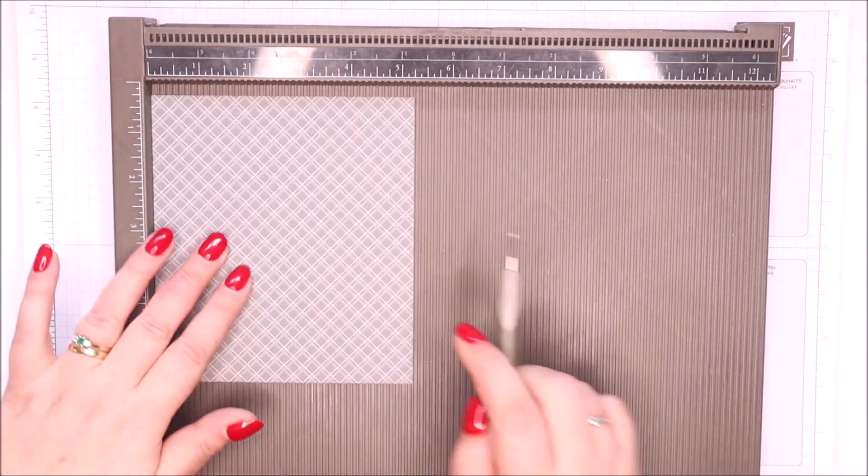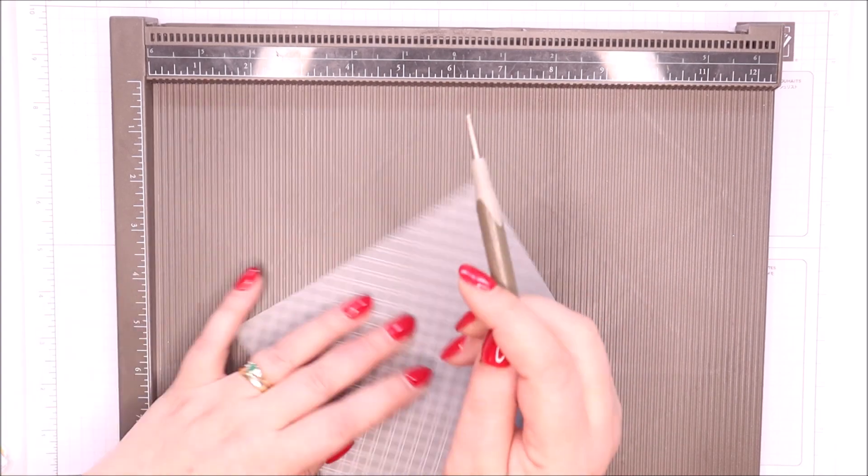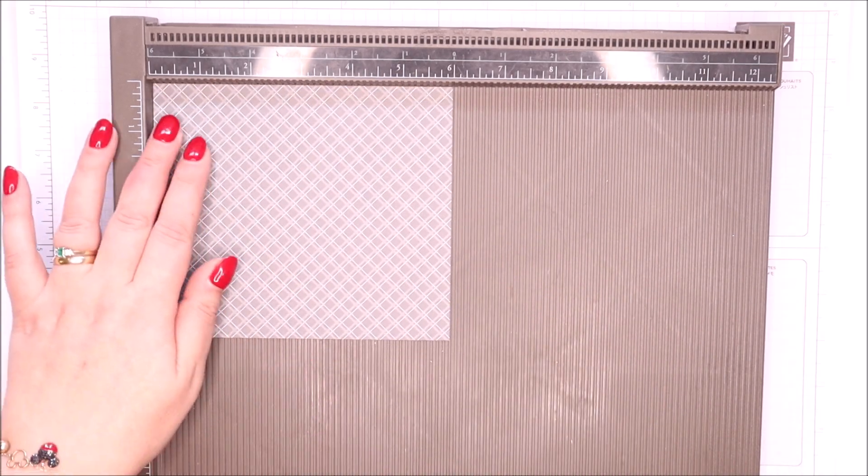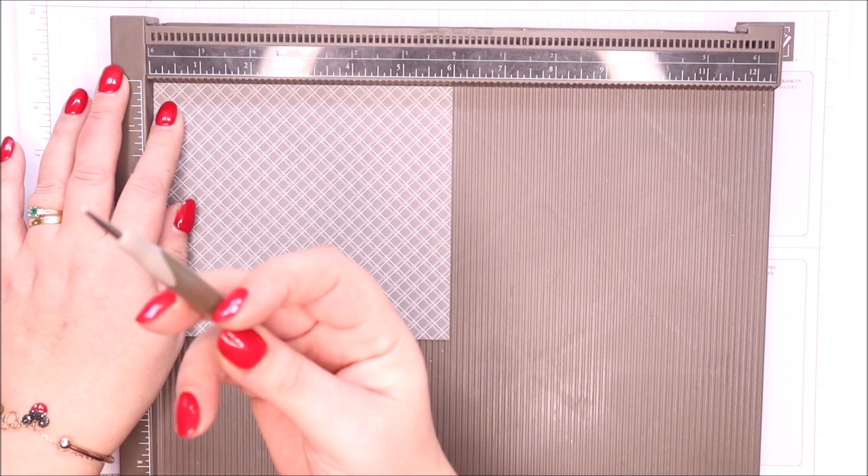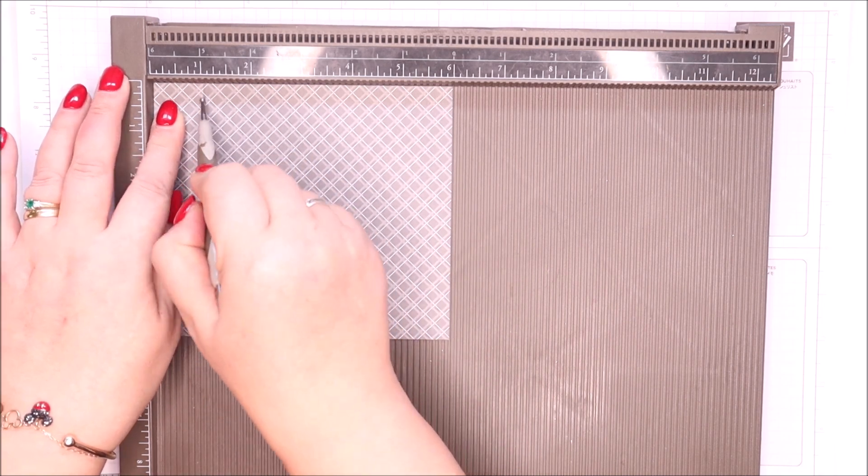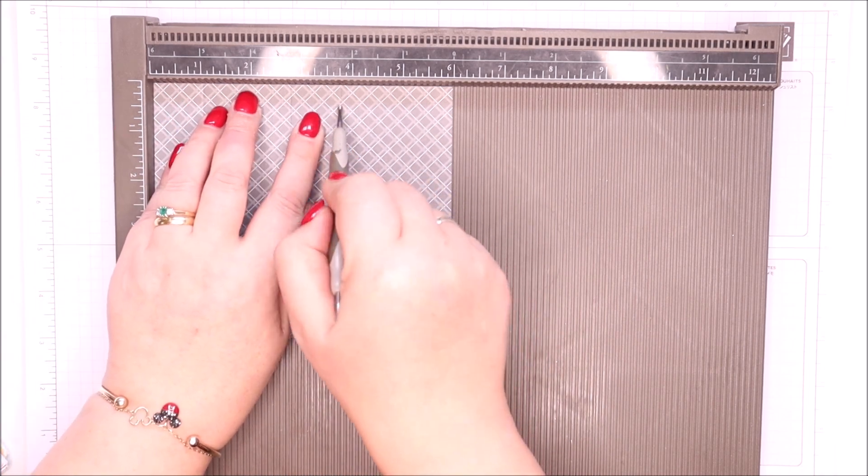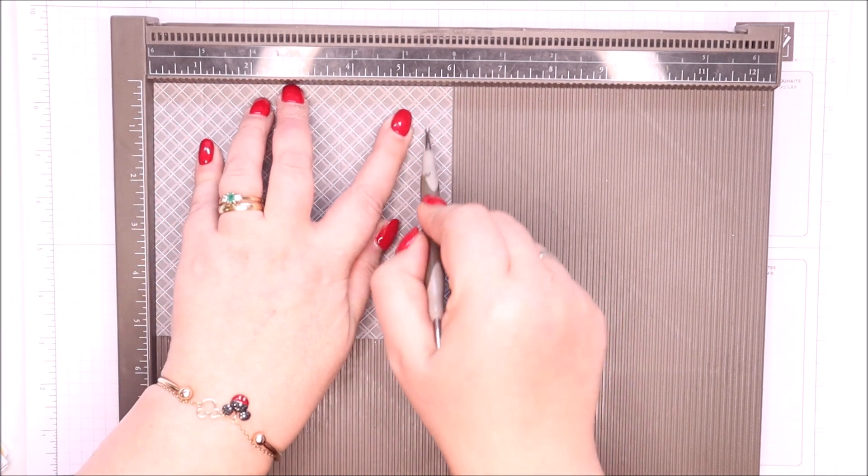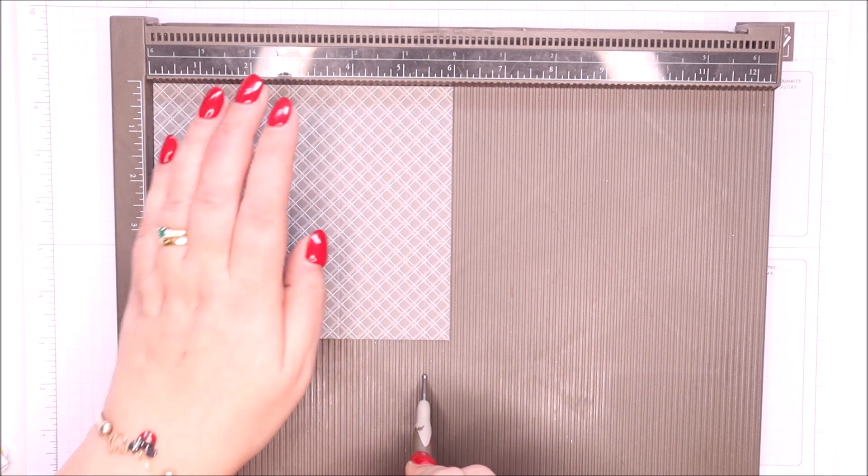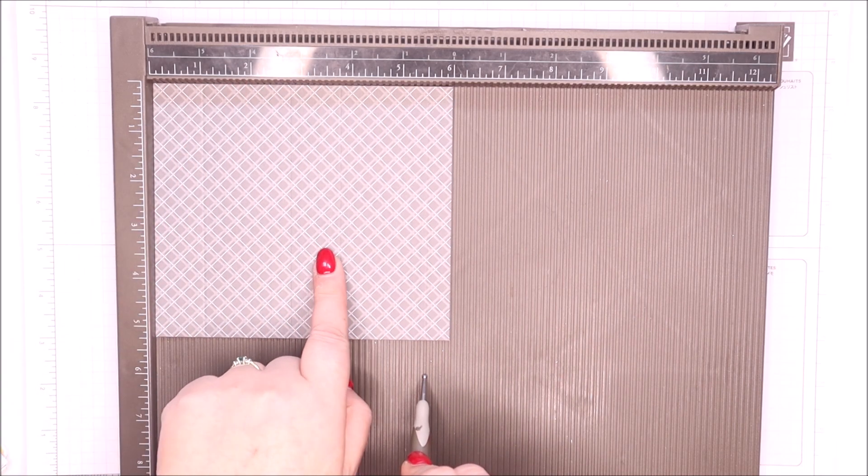You're taking off a little tiny section there. So we'll start on the long side. Score it at one inch, two and three quarters, three and three quarters, and five and a half. And that's all in inches. In metric, two and a half, seven, nine and a half, and fourteen.